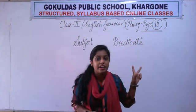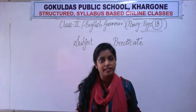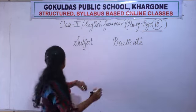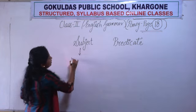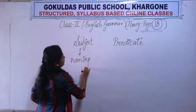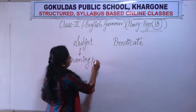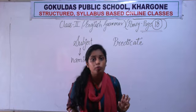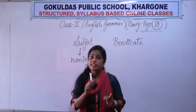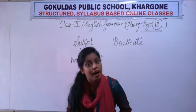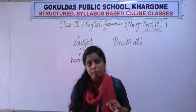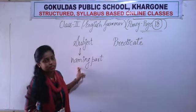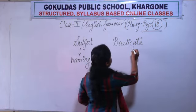Subject and predicate — what are these two? These two are the parts of sentences. Sentence के ये दो parts हैं. So what is the subject? Subject is the naming part of a sentence. Naming part is the part whom we are talking about in the sentence. Naming part sentence का वो part है जिसके बारे में sentence में बात की जा रही है. So the naming part is called the subject.